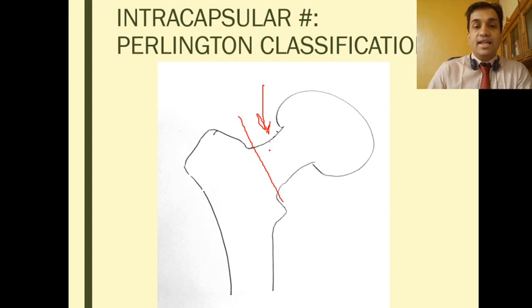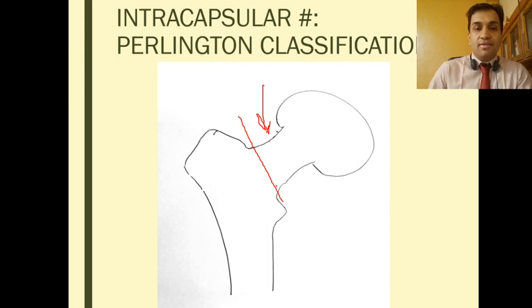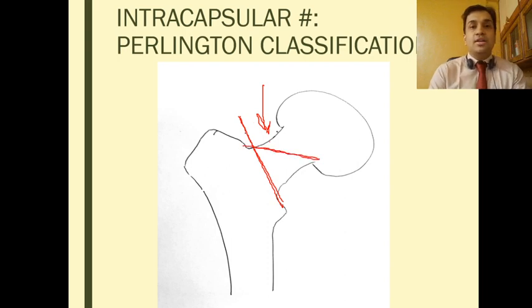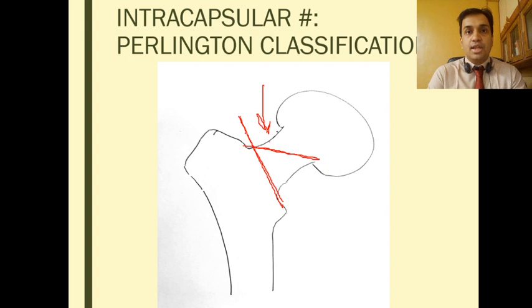as the patient bears weight vertically downwards, the proximal and distal fragments are likely to displace from each other and therefore outcomes are likely to be worse as the fracture line becomes more vertical.